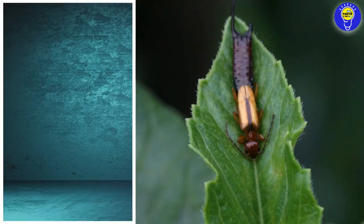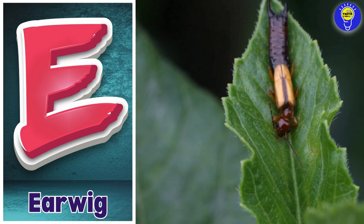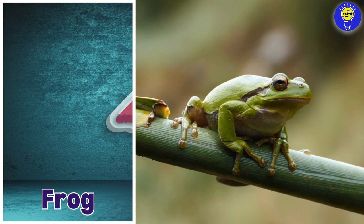E is for earwig. E, e, earwig. F is for frog. F, f, frog. G is for grasshopper. G, g, grasshopper.